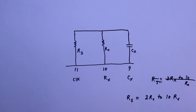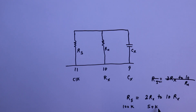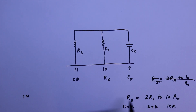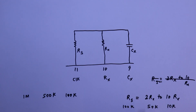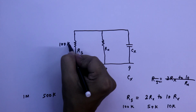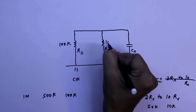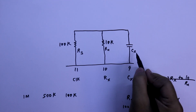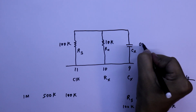The value of RS should be 2×RX to 10×RX. So if RS is equal to 100K, then RX should be between 50K and 10K. If RS is 1M ohm, then RX should be between 500K ohms and 100K ohms. I will use RS as 100K and RX as 10K. For CX, the capacitor, I'll use 0.01 microfarad.